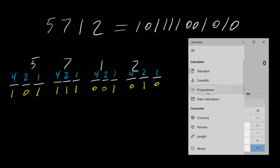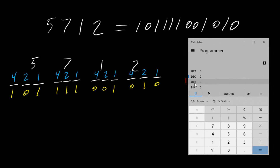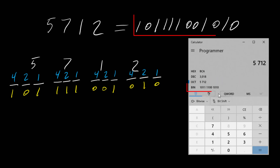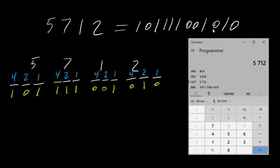Now let's verify using a calculator. Changing the view from standard to programmer view, making sure octal is selected, and entering 5 7 1 2. Here we can see the binary result: 0 1 0 1 0 1 0 1 0 1 0 0 1 1 0 0 1 1 0 0 1 1.